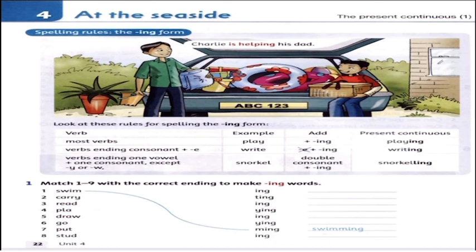First: swimming — double M. Second: caring. Third: reading. Only -ing. Fourth: playing. Fifth: drawing. Sixth: gaming. Seventh: putting — double T. Eighth: studying. Why here -ing? These are the spelling rules for adding -ing to verbs.